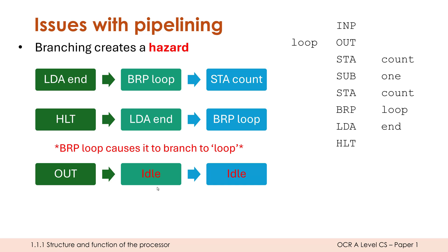This introduces more idle time and means starting again from scratch. Modern CPUs employ clever techniques like speculation and branch prediction to anticipate and avoid this. They're usually good at resolving it, but occasionally they get it wrong and must flush the pipeline, wasting work. Overall though, pipelining makes a big difference to performance and definitely increases the efficiency of CPUs.